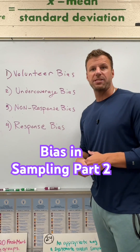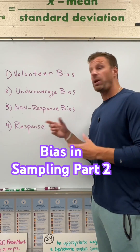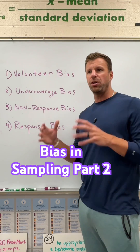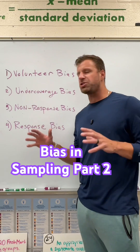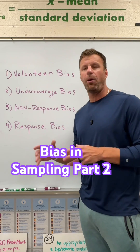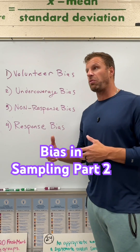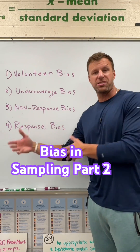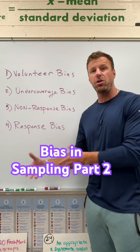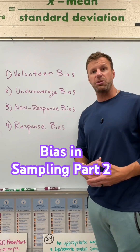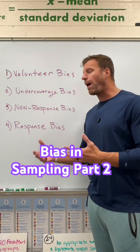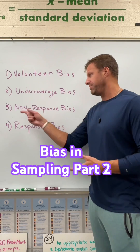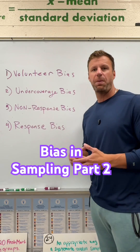Third, we have non-response bias. This is when maybe you do get the best, beautiful, gorgeous random sample, but maybe only 30% of people that you send your survey to actually respond back to it. So the problem is people do not respond, and hence non-response bias.